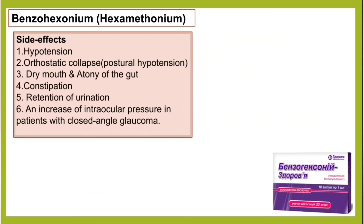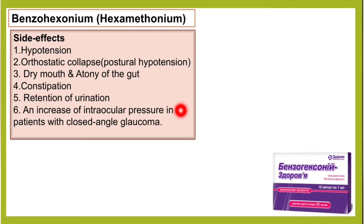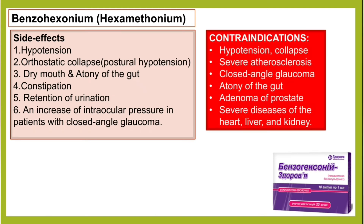Side effects of benzoyl hexonium include hypotension and orthostatic collapse (postural hypotension), dry mouth, atony of the gut, constipation, retention of urine, and increased intraocular pressure in patients with closed-angle glaucoma. This drug is contraindicated in patients with hypotension, severe atherosclerosis, closed-angle glaucoma, atony of the gut, adenoma of the prostate, and severe diseases of the heart, liver, and kidney.